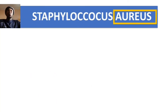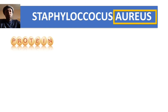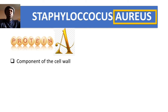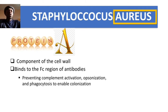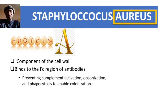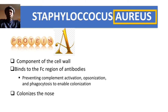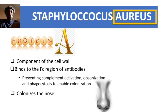The biggest virulence factor of Staph aureus is Protein A. Protein A is a component of the cell wall that binds to the Fc region of antibodies, thereby preventing complement activation, opsonization, and phagocytosis. By blocking these immune processes, it enables colonization. Staph aureus normally colonizes the nose.